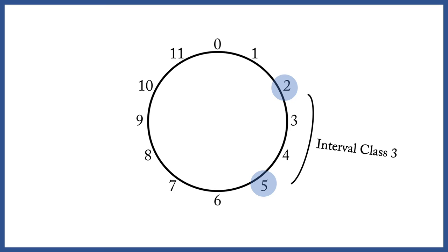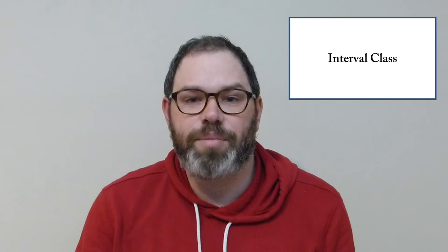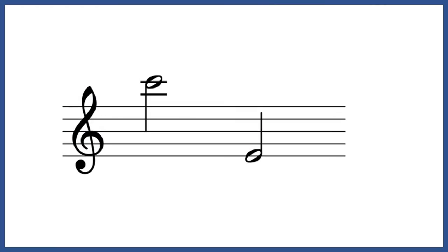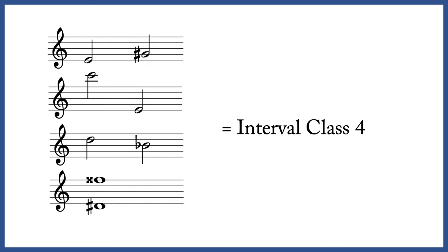We are ignoring the order of the pitches. How many interval classes are there? Think about how far apart any two integers can be on the clock face. If you guessed 6, you're right. Because interval class is only concerned with the distance between two pitch classes on the clock face and not their order, two integers can really only ever be up to 6 semitones apart. That means, for example, that E to G sharp, C to E, D to B flat, and D sharp to F double sharp all represent the same interval class — in this case, interval class 4.